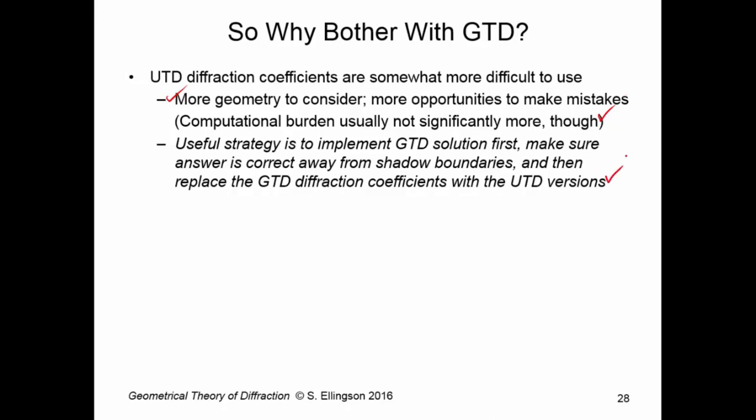I'll point out here that a useful strategy when doing complicated diffraction problems, including reflector-intended problems, is to implement the GTD solution first, and then make sure the answer is correct away from the shadow boundaries where we expect GTD to be right. Once that looks good, then all you have to do is replace the GTD diffraction coefficients with the UTD versions. It turns out that UTD is simply GTD with a different value for the diffraction coefficient. So this is a very effective way to develop a computer program or to work out a solution and to manage the complexity. So first you do GTD and then you replace the coefficients with UTD.